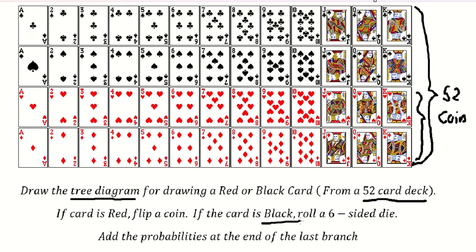And if the card is black, we need to roll the six-sided die. That is for the die in here.